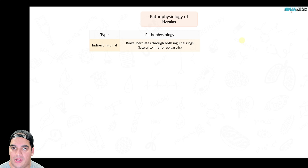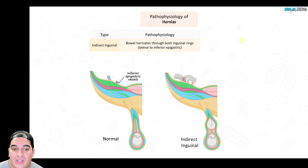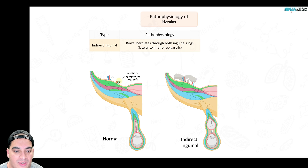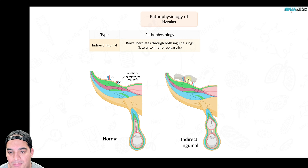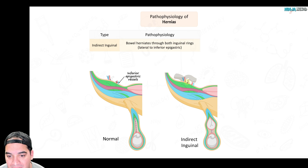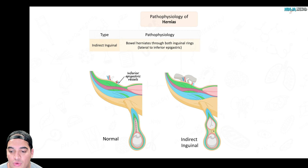We usually base the classification on the position of where the bowel herniates with respect to the inferior epigastric artery. If the bowel herniates lateral to the inferior epigastric artery through the inguinal ring down into the area of the scrotum, this is indicative of an indirect inguinal hernia.